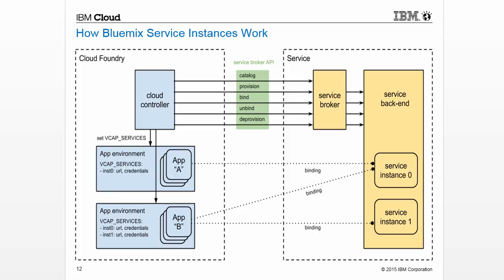In Bluemix and Cloud Foundry, there are two types of services: user-provided service instances and managed service instances. Managed services have been integrated with Bluemix and Cloud Foundry via APIs, enabling end users to provision new service instances and credentials on demand. User-provided service instances are a mechanism to deliver credentials to applications for service instances that have been pre-provisioned outside of Bluemix Cloud Foundry. A managed service integrates with Bluemix and Cloud Foundry via a service broker that implements the service broker API. The service broker advertises a catalog of service offerings and plans to the cloud controller and handles four functions: create, delete, bind, and unbind, passing these calls to the service itself. The cloud controller sets the vcap_services environment variable when binding your application to a service.